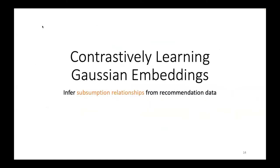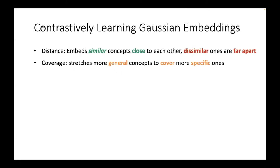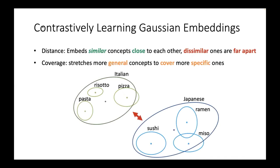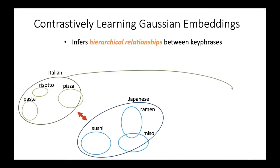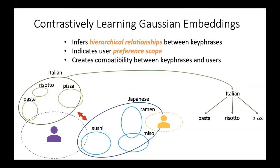On top of training the recommendation model using the VAE-CF objective, we learn Gaussian embeddings for keyphrases contrastively. To enable system clarifications, we need to infer subsumption relationships from recommendation data. During contrastive learning, the model embeds similar concepts close together while dissimilar ones are far apart. Applying contrastive learning to Gaussian embeddings causes the learned embeddings to stretch or shrink their distributional coverage corresponding to their concept generality or specificity. This helps infer hierarchical relationships between criticable keyphrases and indicates user preference scope, creating compatibility between keyphrases and users in the embedding space.